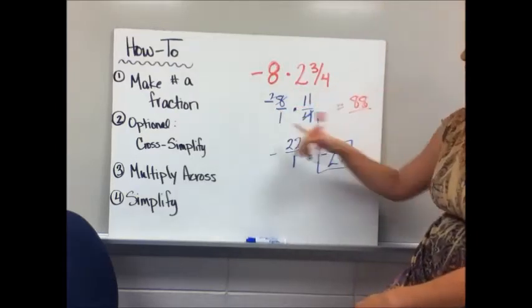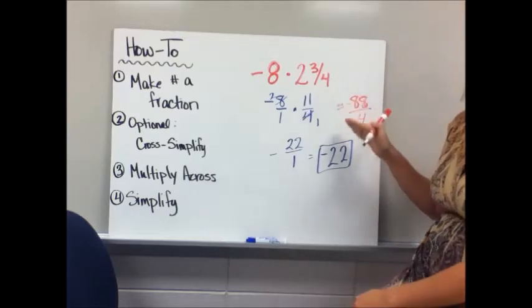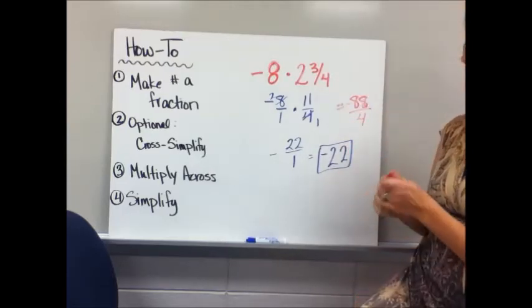8 times 11 is 88, 1 times 4 is 4. It still would have been negative, and then that would have reduced also to negative 22.